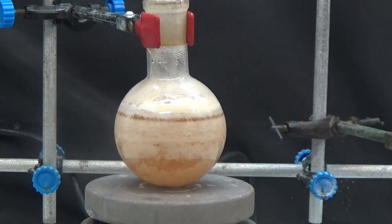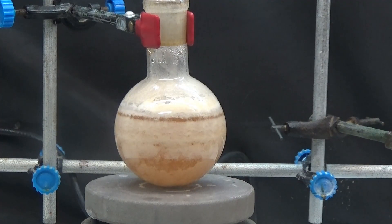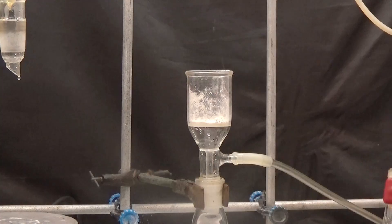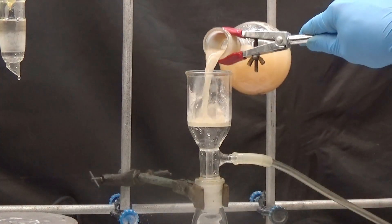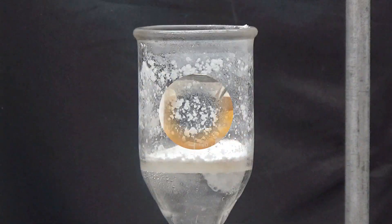The filtered liquid is heated again at reflux for an hour and a half to obtain a second harvest using the same process. Another harvest of diphenylurea and another of phenylurea have been obtained.